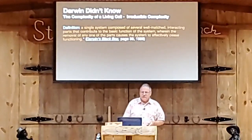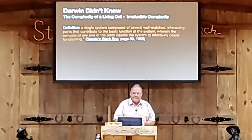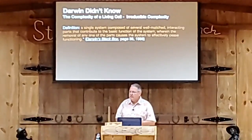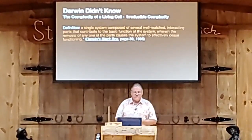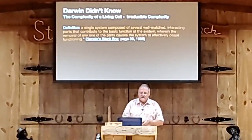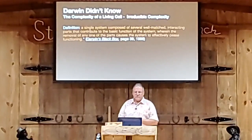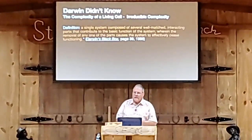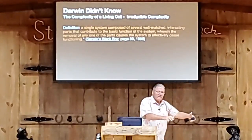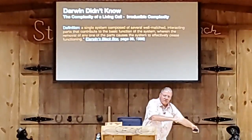Irreducible complexity. This is a concept defined by Dr. Michael Behe in a book in 1996 called Darwin's Black Box. The definition is: a single system composed of several well-matched interacting parts that contribute to the basic function of the system, wherein the removal of any one of the parts causes the system to effectively cease functioning. Irreducibly complex — every single part is necessary, there is no redundancy.